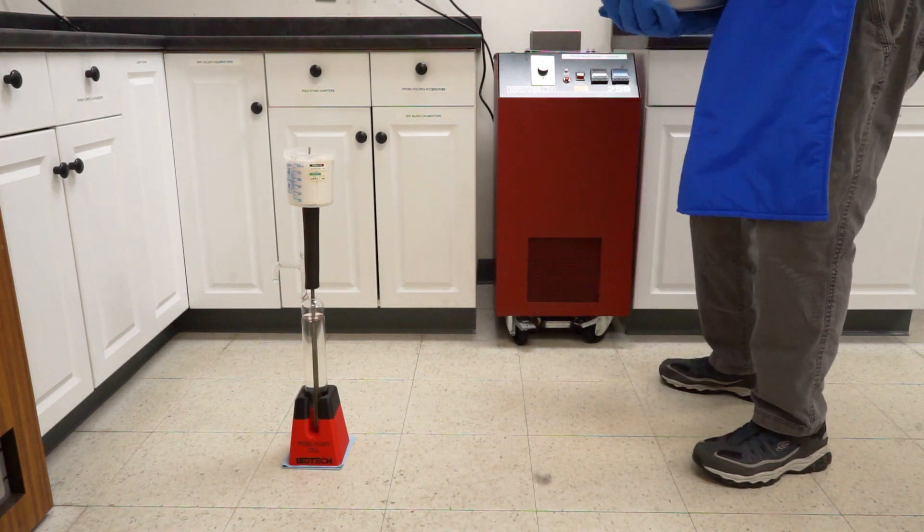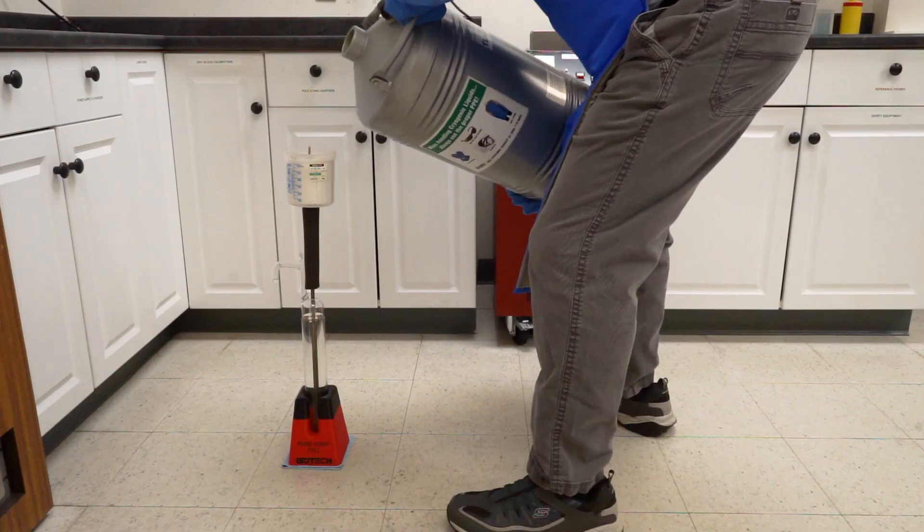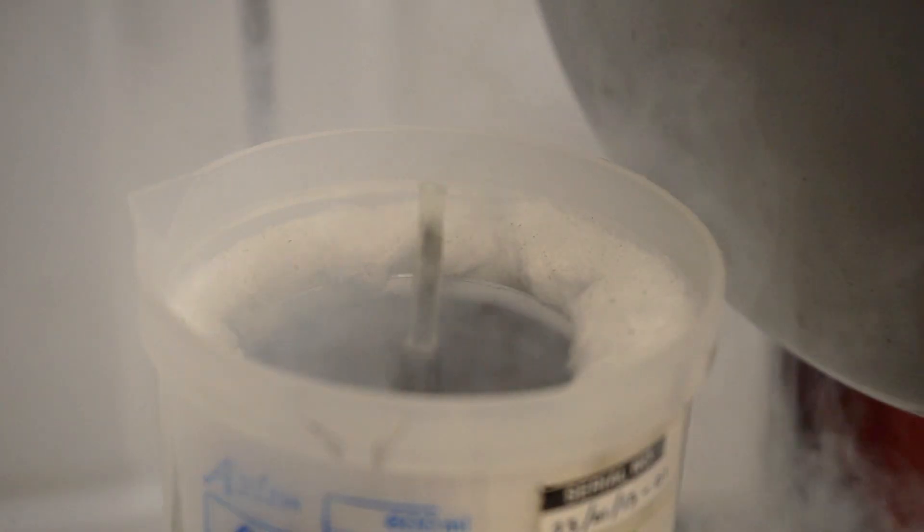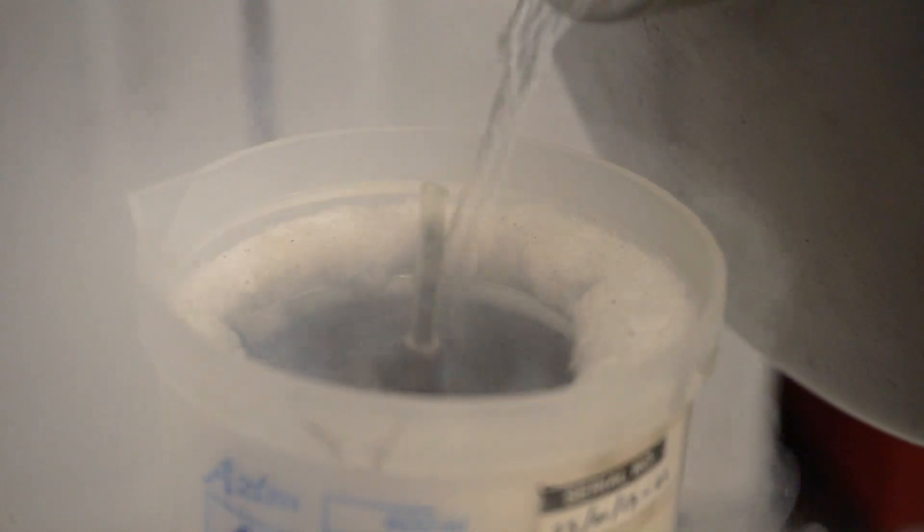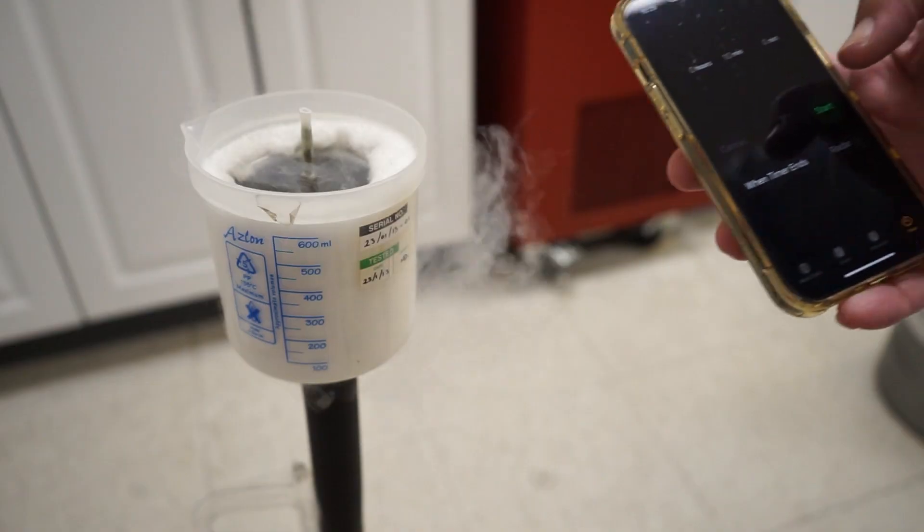Take the liquid nitrogen doer and begin to slowly pour the liquid nitrogen into the mantle maker. It is important to understand that the mantle maker is not able to bear the load of the doer, and that you must not rest the doer on the lip of the mantle maker. Continue pouring until the level reaches near the top of the mantle maker. Then, set a timer for 10 minutes while the mantle maker cools the cell.